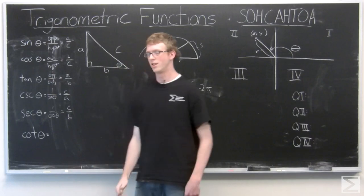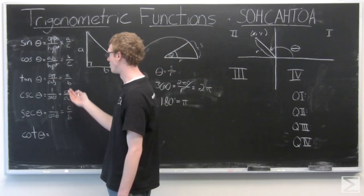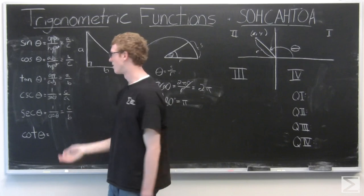And cotangent is 1 over tangent, which is adjacent over opposite, which is B over A.